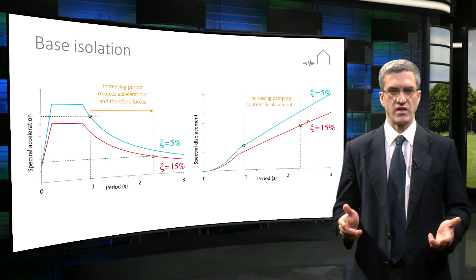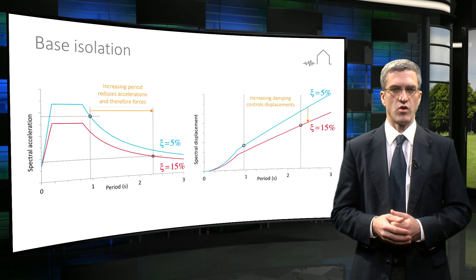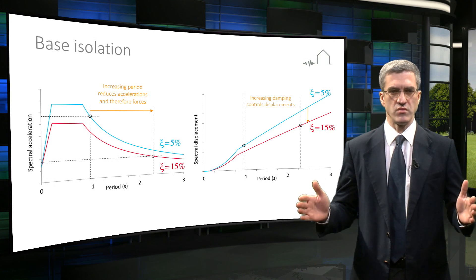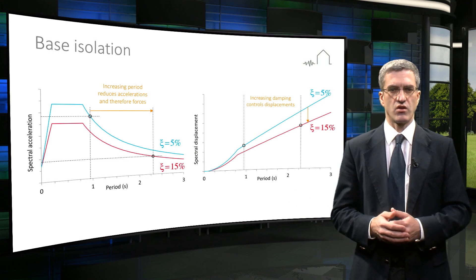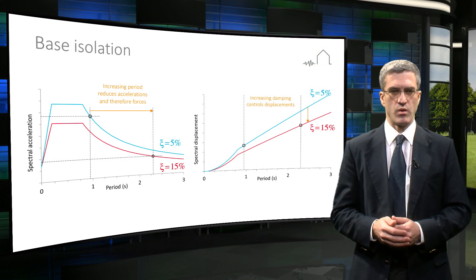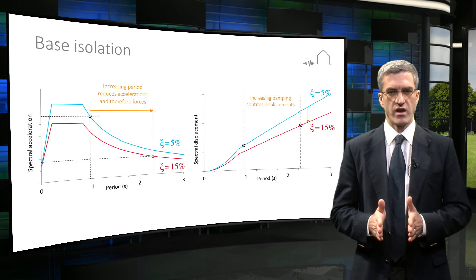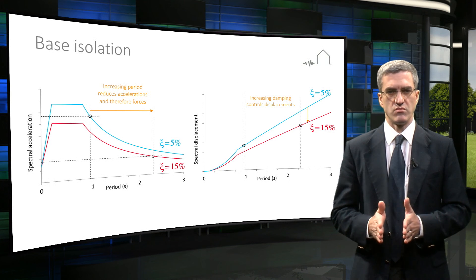Base isolators have to safely accommodate the large horizontal displacements, which can be up to 1 meter in high seismic zones. In the Groningen region, however, the likely displacements are in the range of 50 to 200 mm.